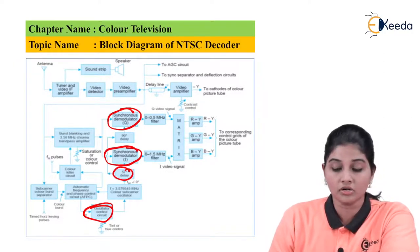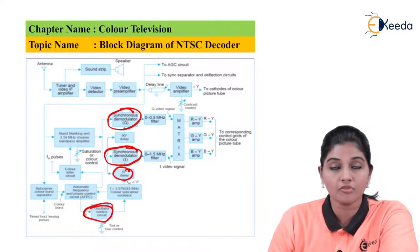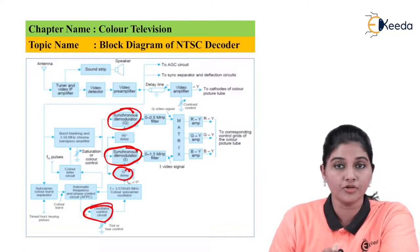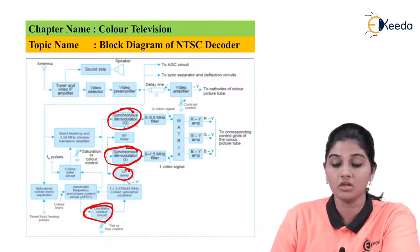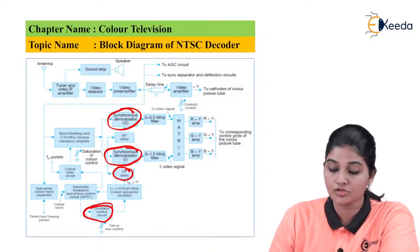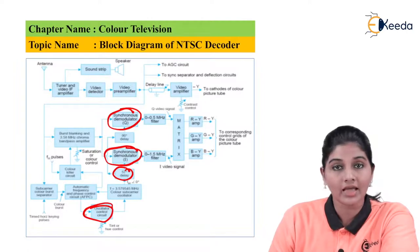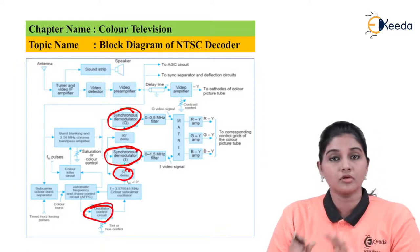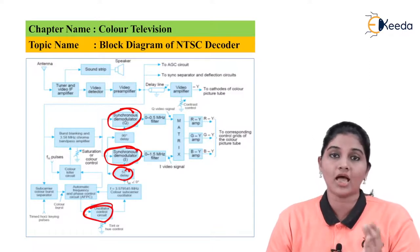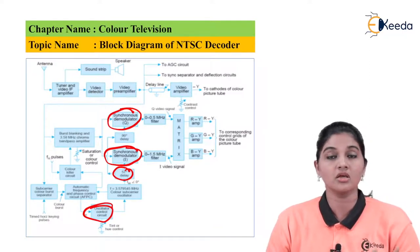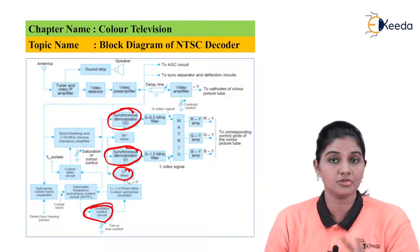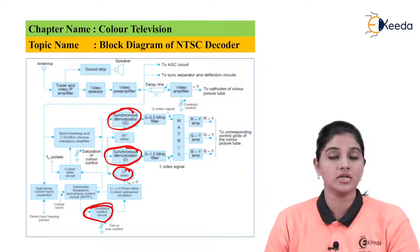The outputs of the demodulators are then frequency restricted by using two filters. For the Q signal, a bandpass filter of 0 to 0.5 megahertz is used, and for the I signal, a filter of 0 to 1.5 megahertz is used. This process is exactly the same as what happens at the transmitter, but here instead of modulation we are dealing with demodulation, which is exactly opposite to the NTSC encoder.